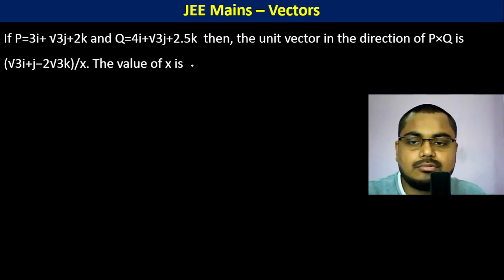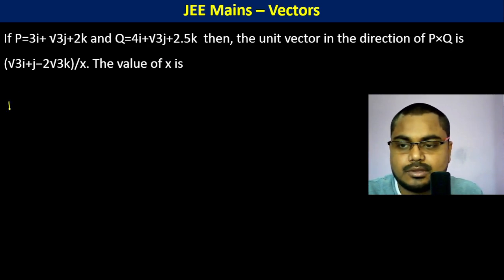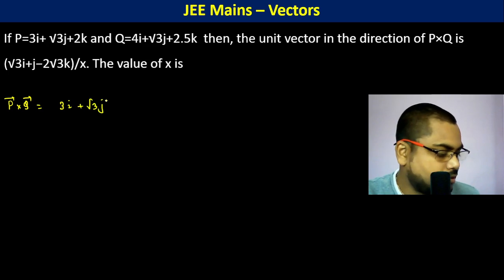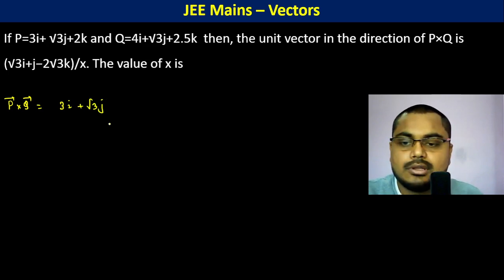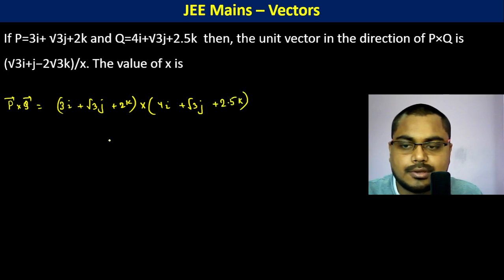If P and Q are this respectively, then the unit vector in the direction of P cross Q is this. First, P cross Q is 3i plus root 3j plus 2k cross 4i plus root 3j plus 2.5k.